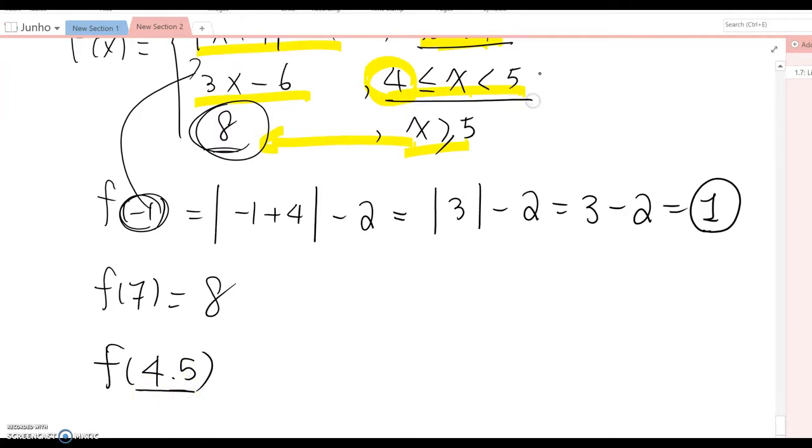So 4.5 belongs to this interval, so you are using this equation. So 3 times 4.5 minus 6, so it becomes 13.5 minus 6, which means 7.5. That will be the answer for this problem. Okay.